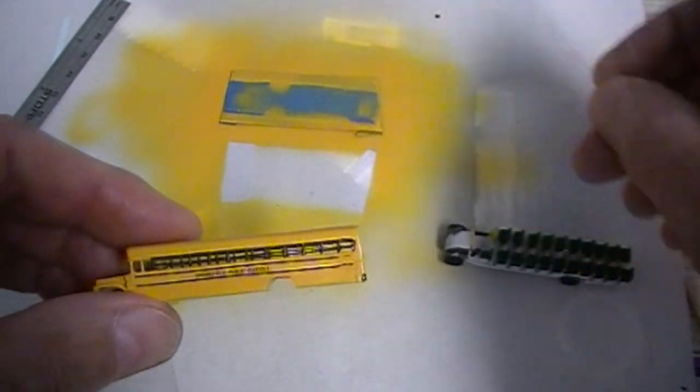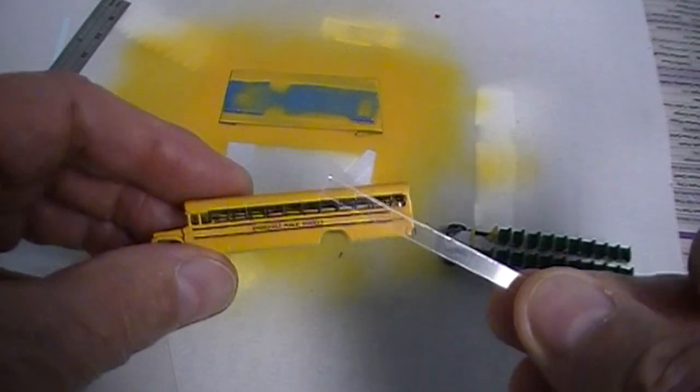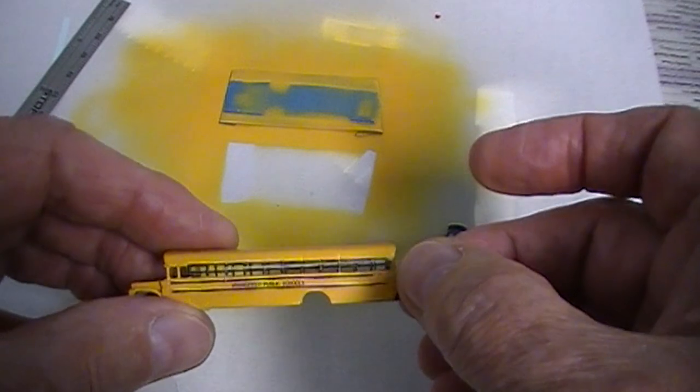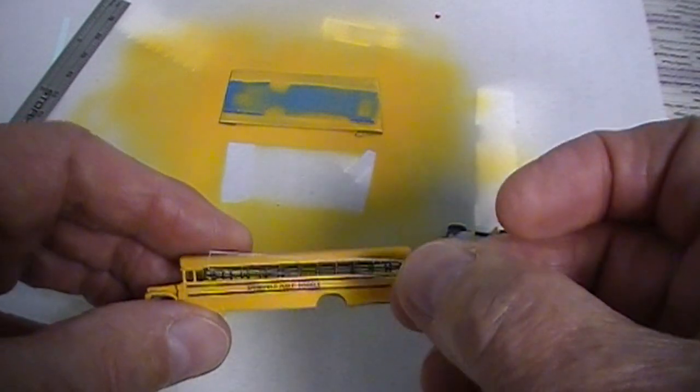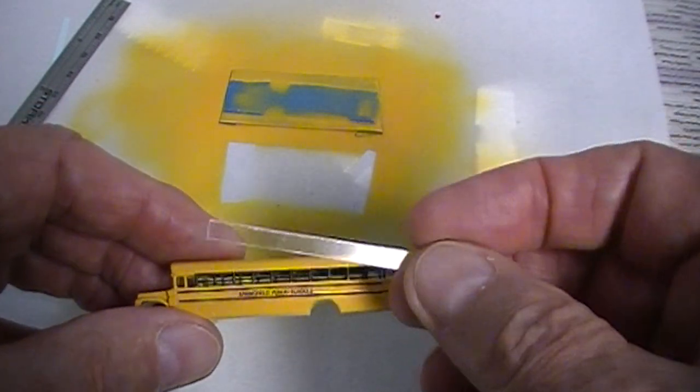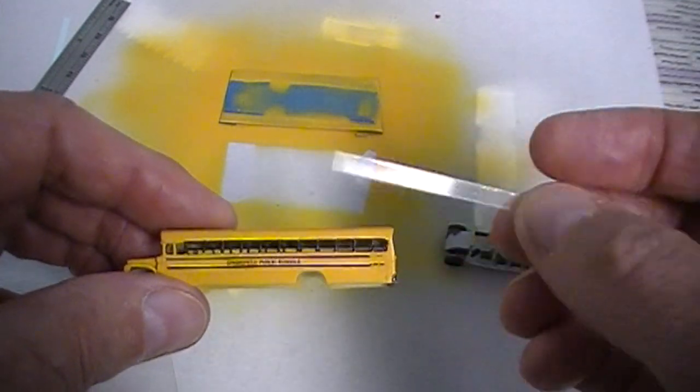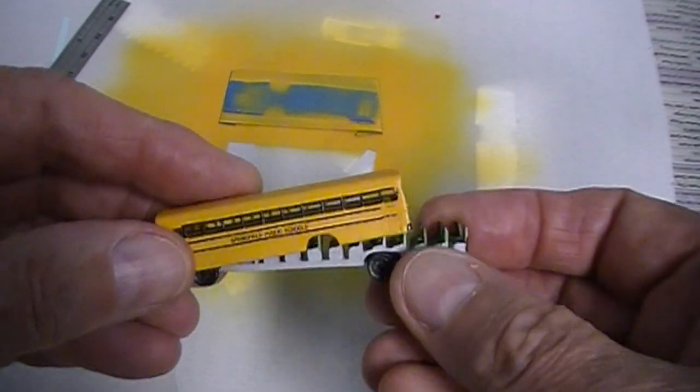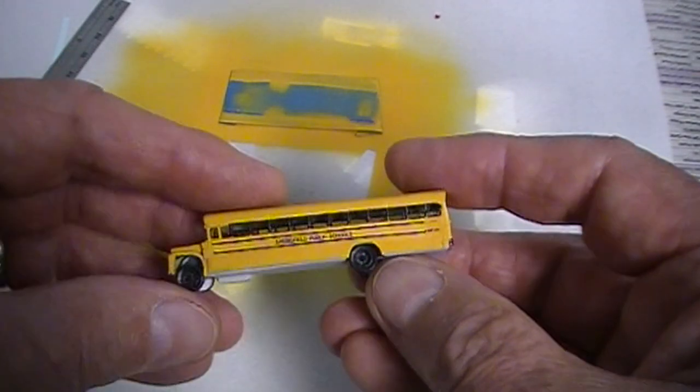My next thing I'd like to try to do is I've got some very very thin, I'll get the measurement on this, plastic here. And I'm going to try to put this, mount this inside the windows and see if I can get those to go in there. So far it has come together very nice.